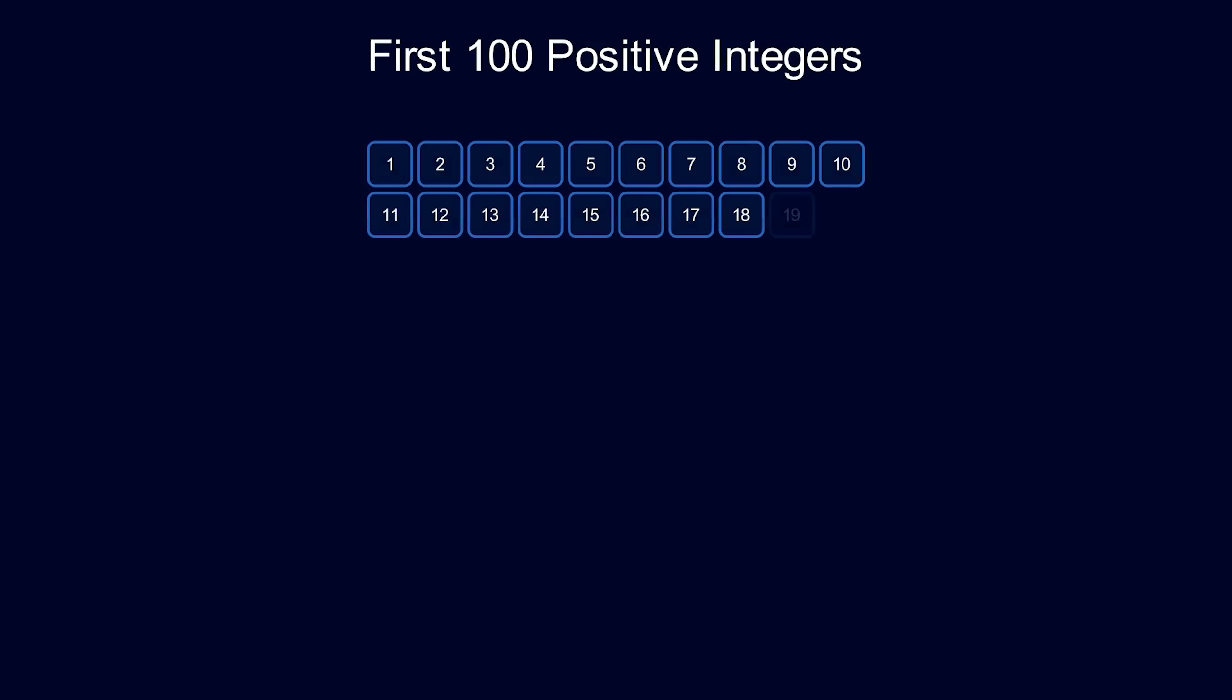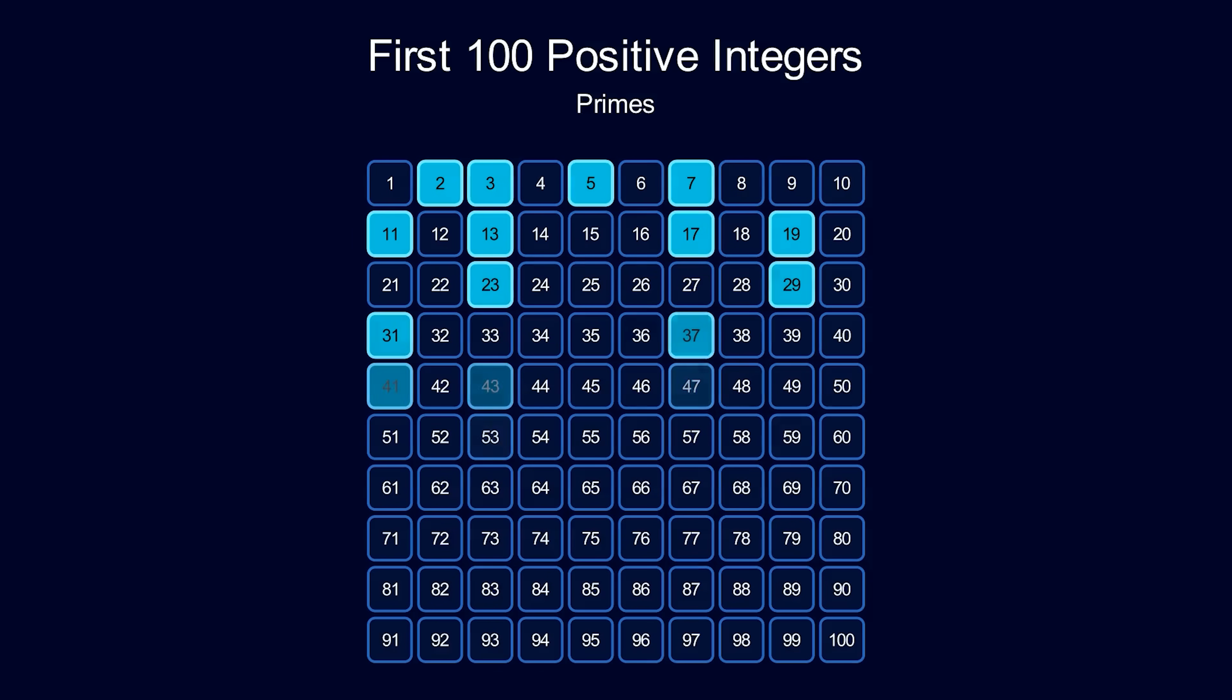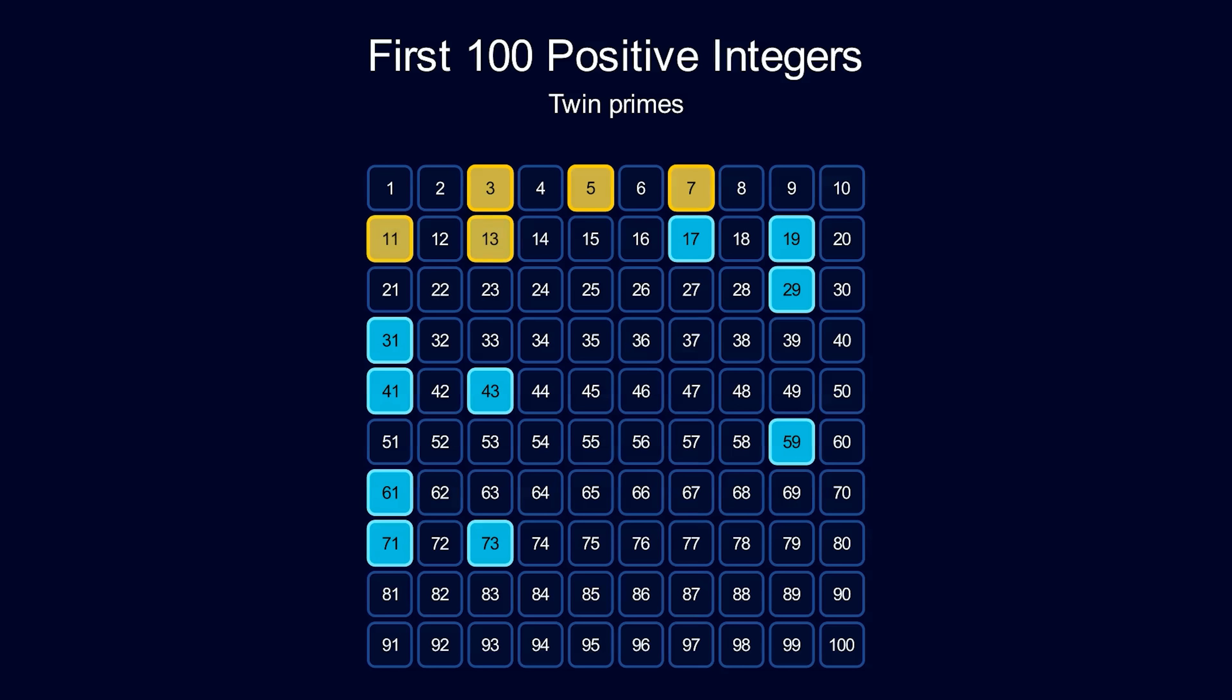If we look at the first 100 positive integers, here are the primes highlighted. Now here are the twin primes highlighted. Notice that not every prime is a twin prime.